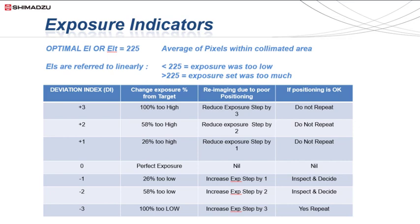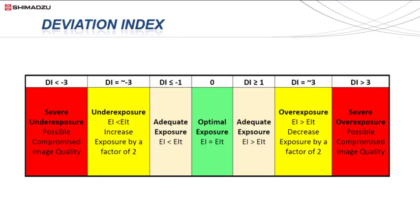However, using the deviation index or DI is a more accurate representation of how far off the perfect exposure you are, and should be used when amending exposures prior to repeating an x-ray image. The deviation index quantifies the difference between the actual EI and the EI target value, and is intended to be an indication to the technologist on whether the radiographic technique is appropriate for the specific body part. An optimal image is obtained when the actual EI and the target are equal — as there is no deviation away from the perfect exposure, the DI value will be zero.